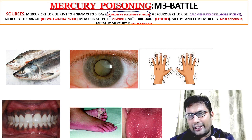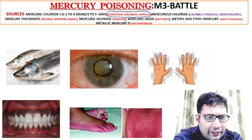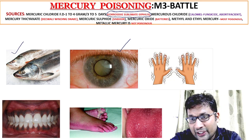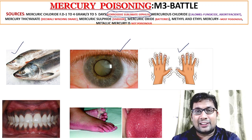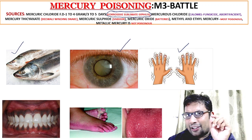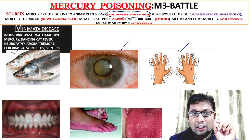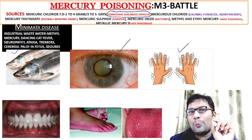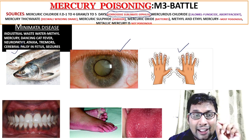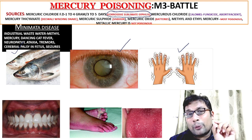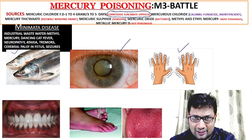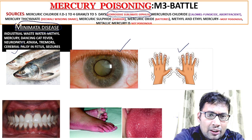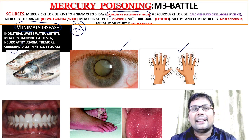Let's discuss M3 Battle. There is a picture of a fish and an eye, and an extreme degree of tremor. Whenever you see that picture, that is Minamata disease. M for Minamata disease — a disease that happened in Japan due to consumption of industrial wastewater containing methyl mercury. It is characterized by neuropathy, ataxia, tremor, cerebral palsy in the fetus, and seizures. It is also known as dancing cat fever. So this is the first M — Minamata disease.